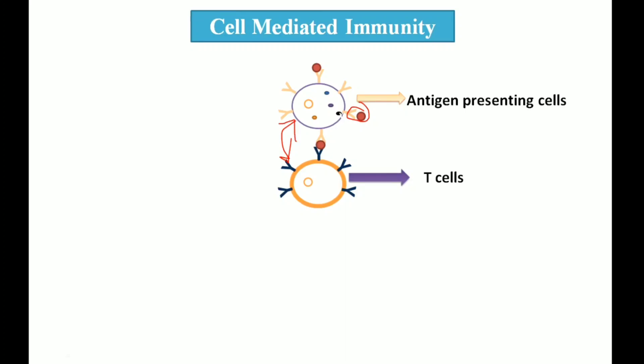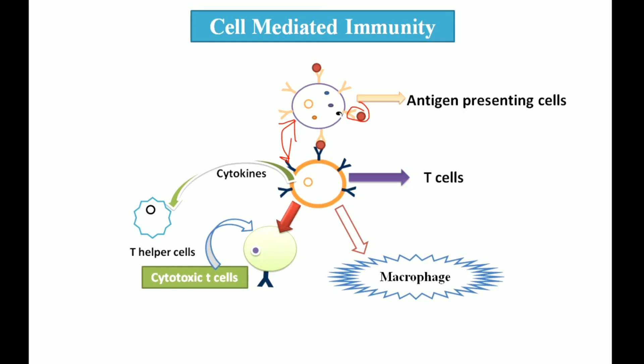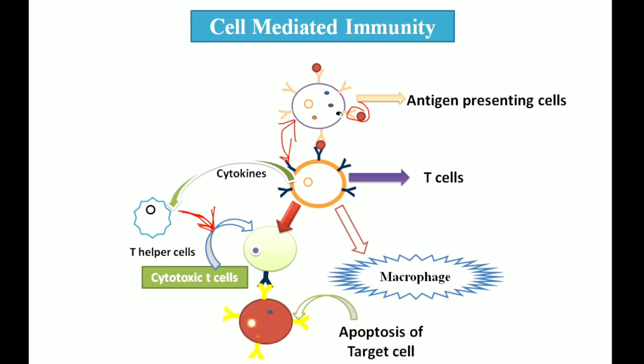By activating T cells through cytokine receptors, helper T cells become activated. These helper T cells secrete cytokines which in turn activate macrophages and cause helper T cells to transform into cytotoxic T cells. Later on, these cytotoxic T cells induce apoptosis in the infected cells, causing them to die. This is how the cell-mediated immune system works.